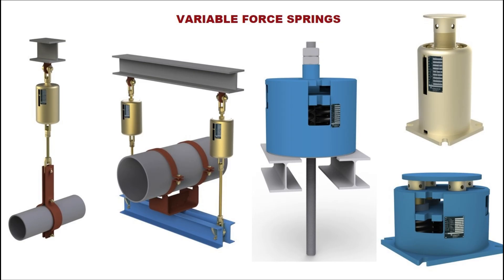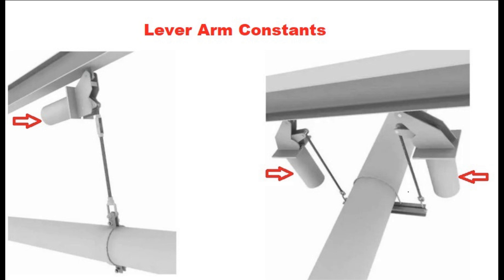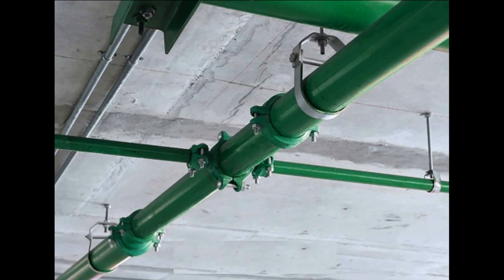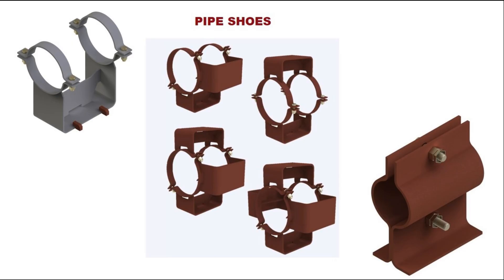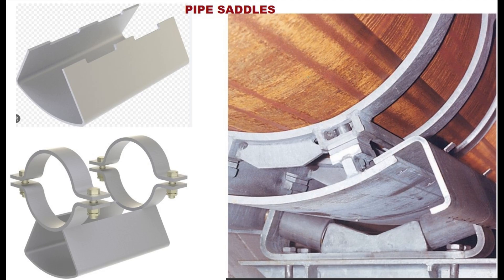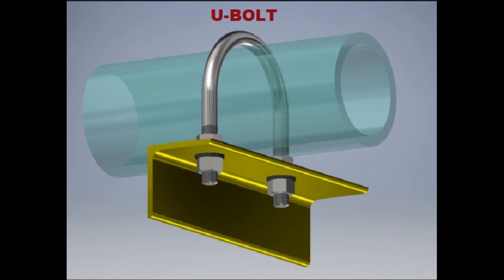Let's take a look at some examples of static supports. Here we see different types of variable springs — the first three on the left would be installed above the pipe, and the two on the right would be installed below the pipe. Next are constant force springs, followed by sway braces, rod hangers, pipe shoes, slide plates, pipe saddles with roller bearings, stanchions, and basic U-bolts that can be used as an anchor or a guide depending on how they are installed.